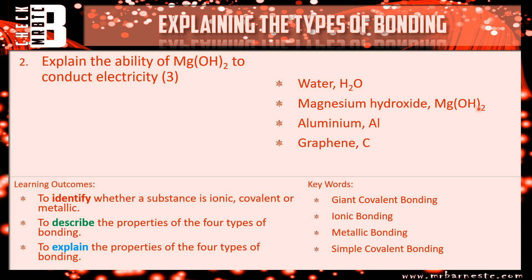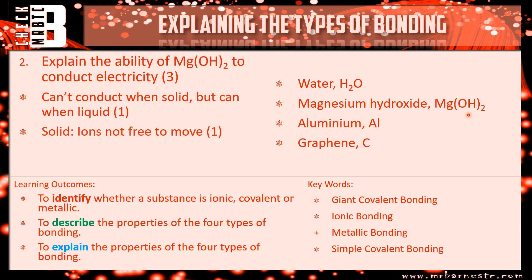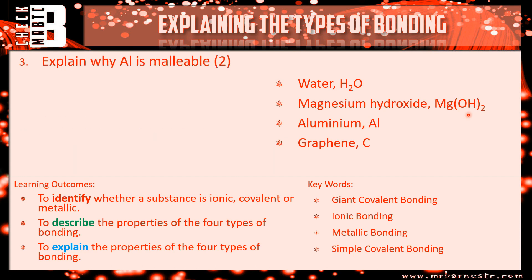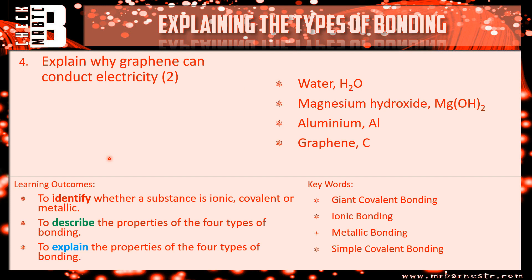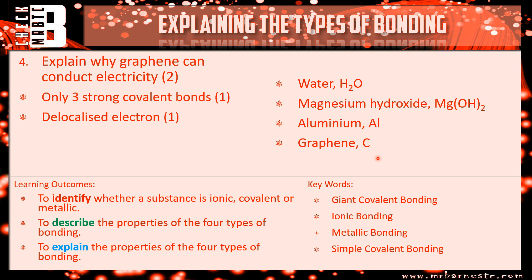Question two — explain the ability of Mg(OH)2 to conduct electricity. It's ionic, so it can't conduct as a solid because ions can't move due to the strong electrostatic attraction, but it can conduct as a liquid because the ions become free to move and can pass on a charge. Question three — aluminium is malleable because the layers can slide past each other without breaking the strong electrostatic attraction between cation and delocalized electron — it doesn't break the metallic bond. Question four — graphene conducts because it has three covalent bonds, leaving a delocalized electron that is free to move and carry or pass on a charge.